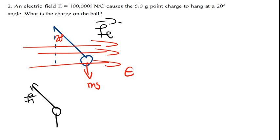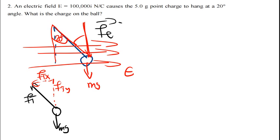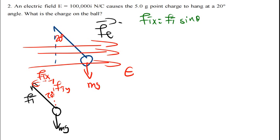We have tension force Ft acting at an angle, and mg pointing downward. The tension force has components: Ftx and Fty. The angle formed is the same as the hanging angle, so it is 20 degrees. Using SOHCAHTOA: Ftx equals Ft sine theta, and Fty equals Ft cosine theta.